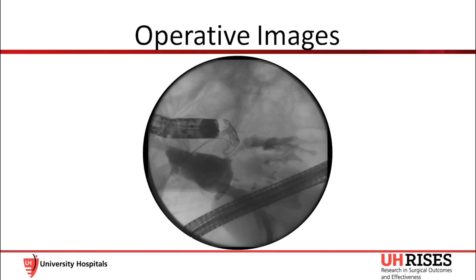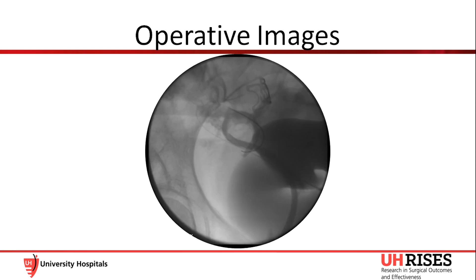Contrast was again injected through the drain, and this time there is no contrast seen in the colon. We then turned our attention to the colocutaneous fistula. The jagwire was advanced through the cutaneous portion of the fistula tract, monitored on fluoroscopy, and noted to enter the pericolonic abscess cavity. Using Seldinger technique, a 10 French Blake drain was advanced over the wire, through the colocutaneous tract, into the pericolonic abscess for additional drainage. This was secured to the skin with suture.